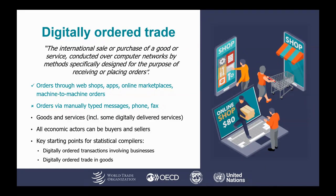Digitally ordered trade is defined as the international sale or purchase of a good or service conducted over computer networks by methods specifically designed for the purpose of receiving or placing orders. Well-known online ordering methods such as web shops, apps, and online marketplaces are included, as are orders placed via machine-to-machine messaging systems. Digital ordering excludes orders placed online but via manually typed messages, such as emails or sent through messaging apps. Both goods and services can be digitally ordered, and not only businesses and households, but also government units and non-profits can engage in digitally ordered trade, both as buyers and as sellers.